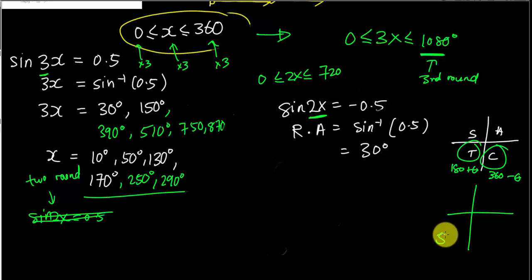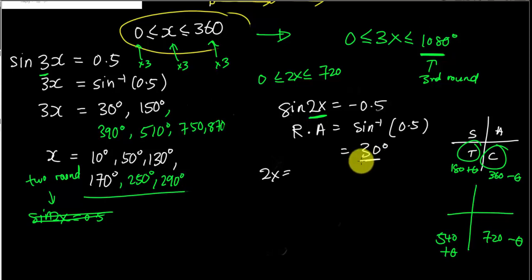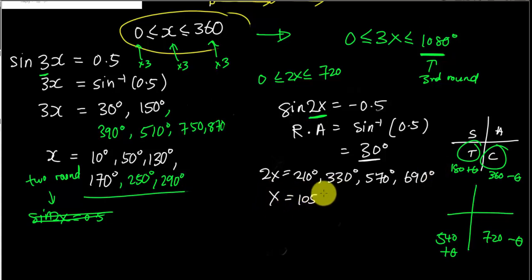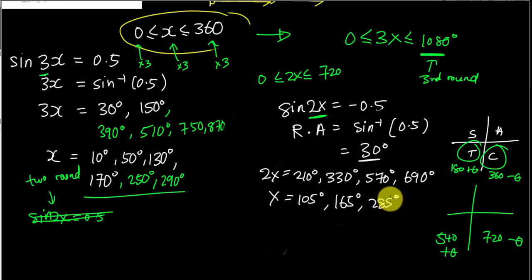For the second round, both angles plus 360: third quadrant becomes 540 plus delta, fourth quadrant becomes 720 minus delta. So 2x equals 180 plus 30 which is 210; then 360 minus 30 which is 330; then 540 plus 30 which is 570; then 720 minus 30 which is 690. Dividing each by 2: 105, 165, 285, and 345.